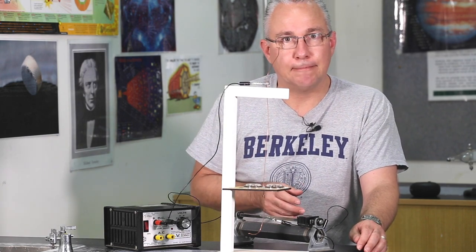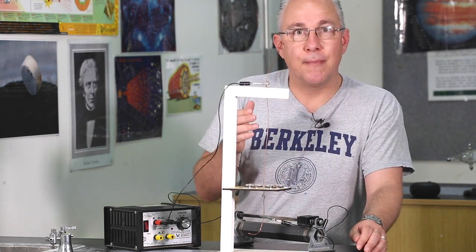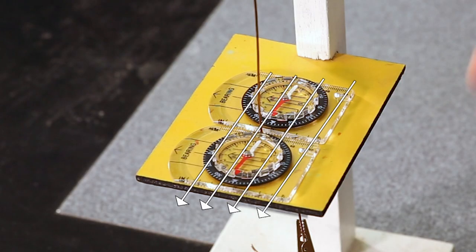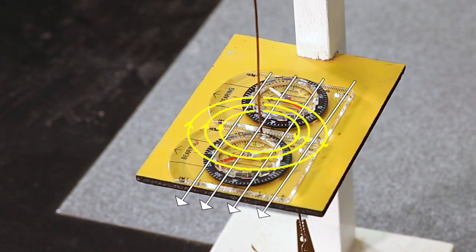Now why is it deflecting? Well the magnetic field due to the earth of course aligns these compass needles in that direction. But as I turn it on what we're having here is a magnetic field that is circular around the wire.